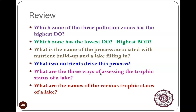What are the names of the various trophic states that a lake can have? What's the trophic status of Lake Reba, Wilgreen Lake, Laurel Lake, Lake Cumberland, or the Ohio River at Louisville? The major trophic states are: eutrophic, oligotrophic, mesotrophic, and hyper-eutrophic.